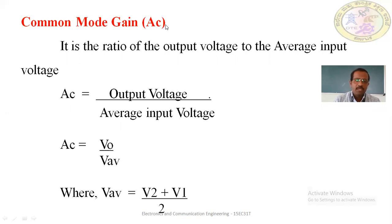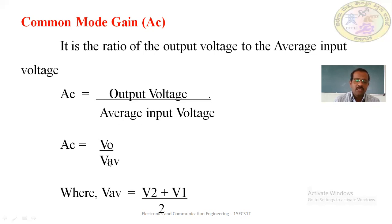The common mode gain AC is the ratio of the output voltage to the average input voltage. AC = V0 / VAV, where VAV = (V2 + V1) / 2. V2 is the voltage applied to the non-inverting terminal and V1 is the voltage applied to the inverting terminal.